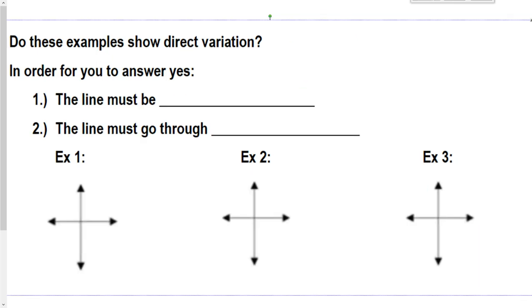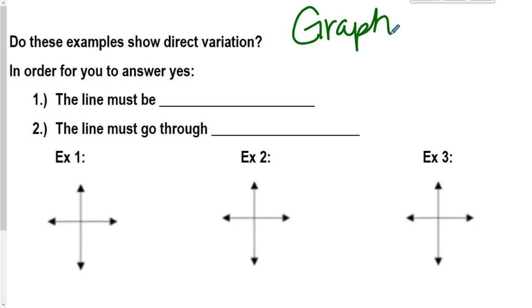Alright, now we're going to look at graphing. So how can we tell based off of a graph if it's direct variation? So for it to be direct variation, first of all, the line must be straight. It has to be a straight line. And it has to go through the origin. Remember, the origin is zero, zero. And it's where our two lines intersect.